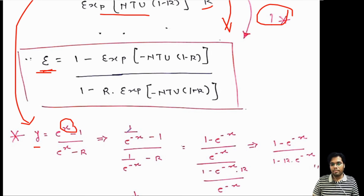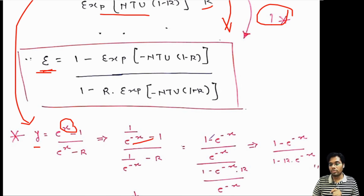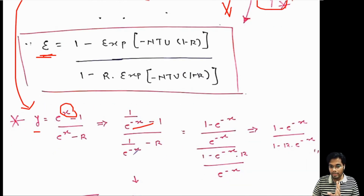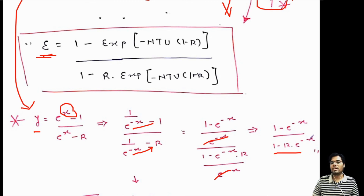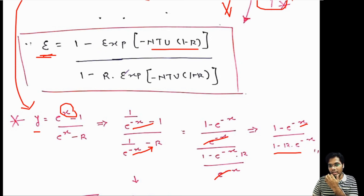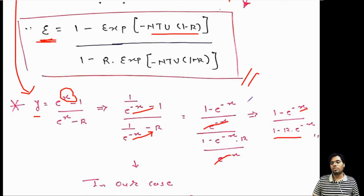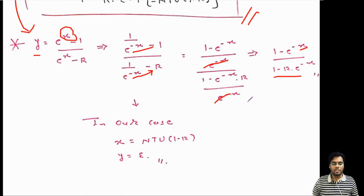Replacing x with NTU·(1-R) and y with epsilon, the final equation for effectiveness of a counter flow heat exchanger is: epsilon = [1 - exp(-NTU·(1-R))] / [1 - R·exp(-NTU·(1-R))]. I hope this is clear for today's session. Thank you.